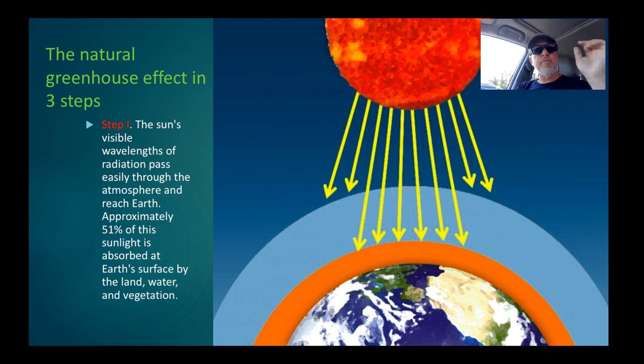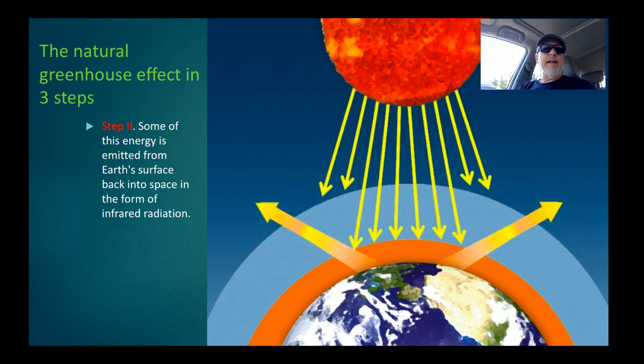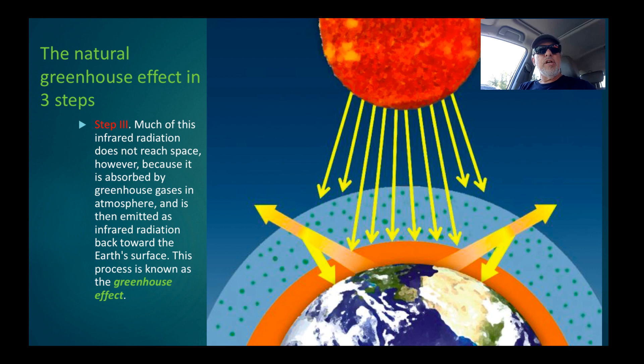As the temperature increases, the rate of radiation of IR light into space increases until you get a new equilibrium. Here we have it in pictures. The natural greenhouse effect in three steps. Step one: the sun's visible wavelengths of radiation pass easily through the atmosphere. Approximately 51% of this sunlight is absorbed at the Earth's surface. Step two: some of the energy is emitted from the Earth's surface back into space in the form of infrared radiation. Much of the infrared radiation does not reach space because it is absorbed by the greenhouse gases and re-emitted as infrared radiation back towards the Earth's surface and also towards space. This process is known as the greenhouse effect.